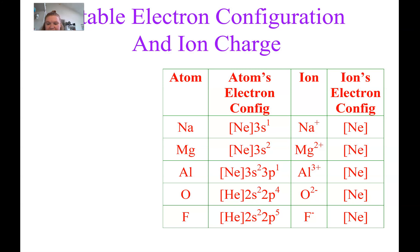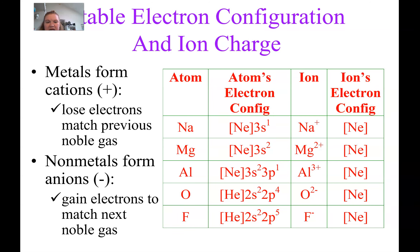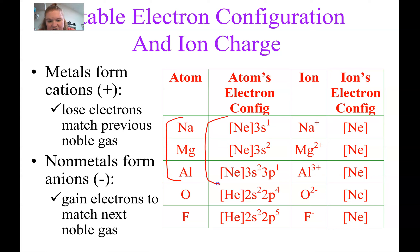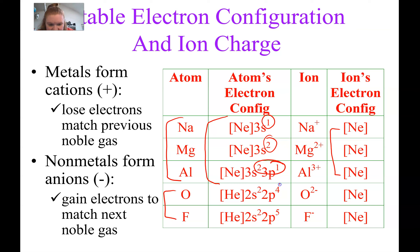Looking at ions: electrons are gained or lost in order to look like a noble gas. For cations, if sodium, magnesium, or aluminum lose one, two, or three electrons respectively, they will end up with a configuration just like neon, and their charge matches how many electrons were lost. For anions, oxygen gains two electrons and fluorine gains one electron, and both end up looking just like neon as well.